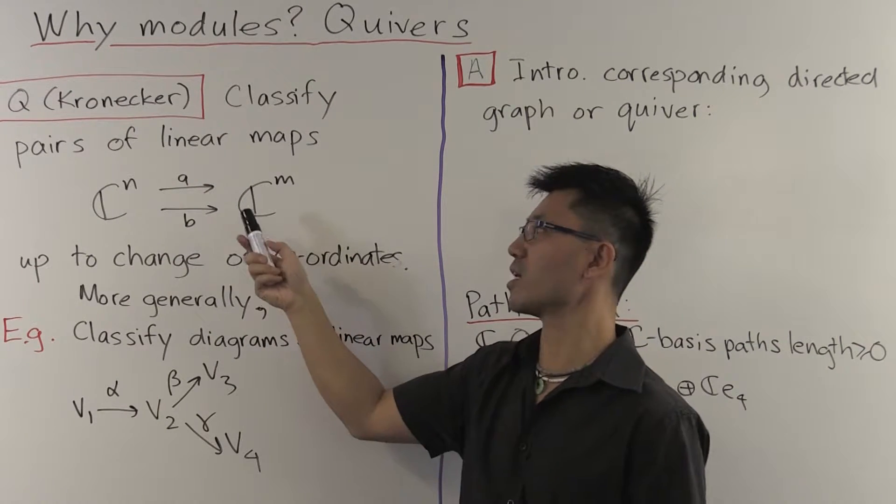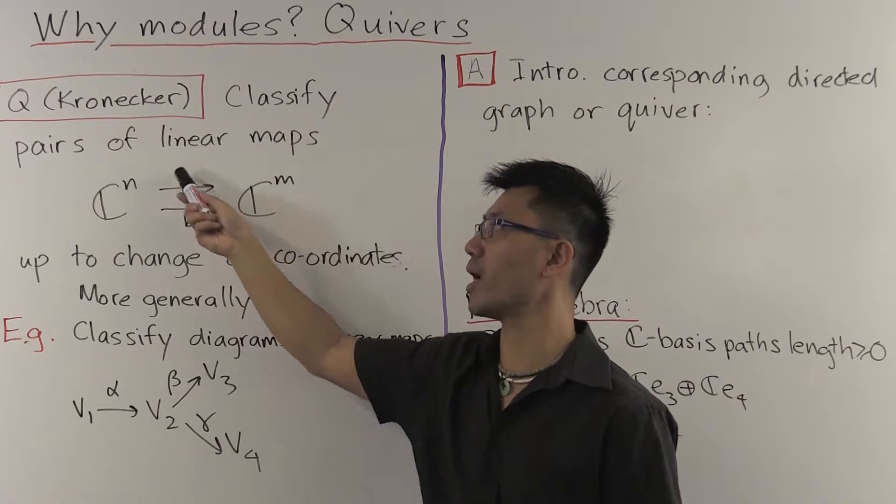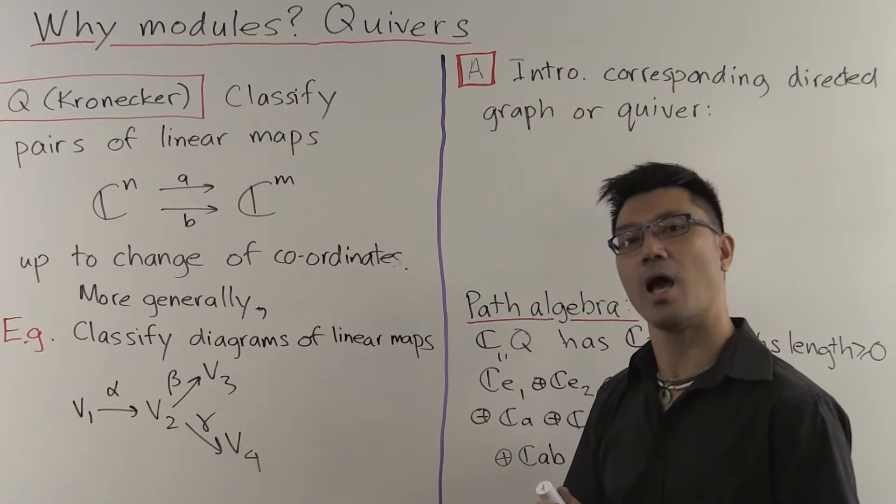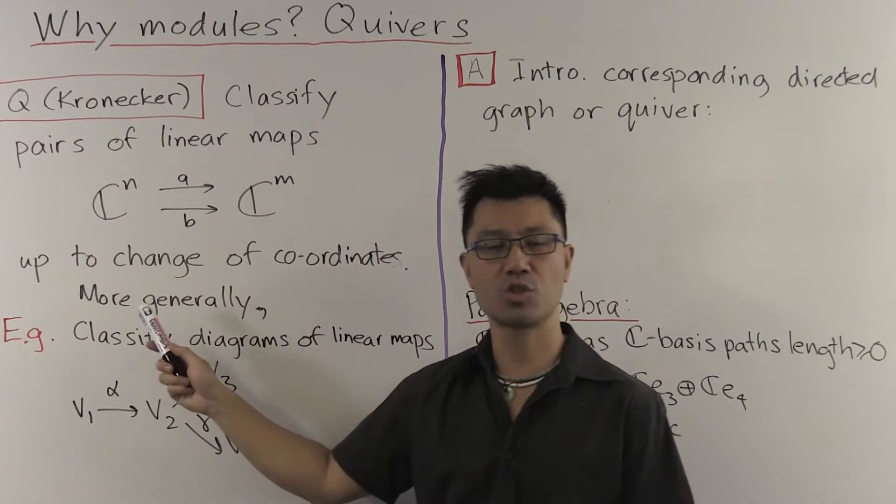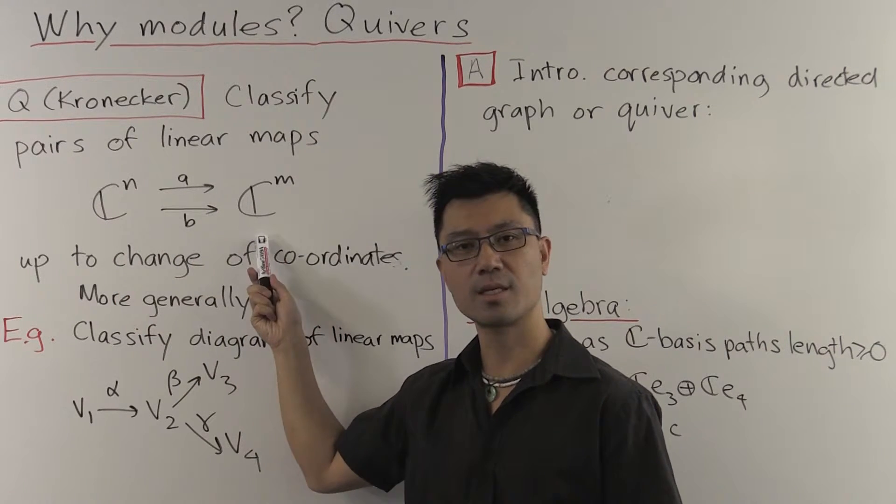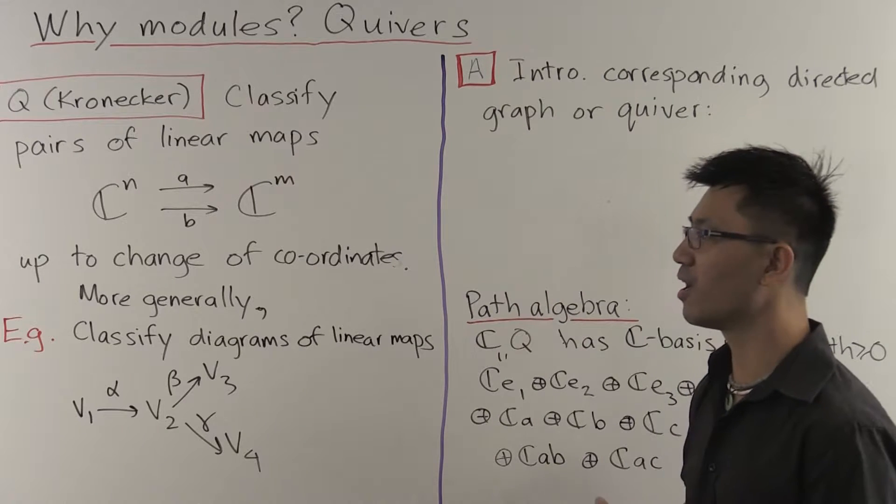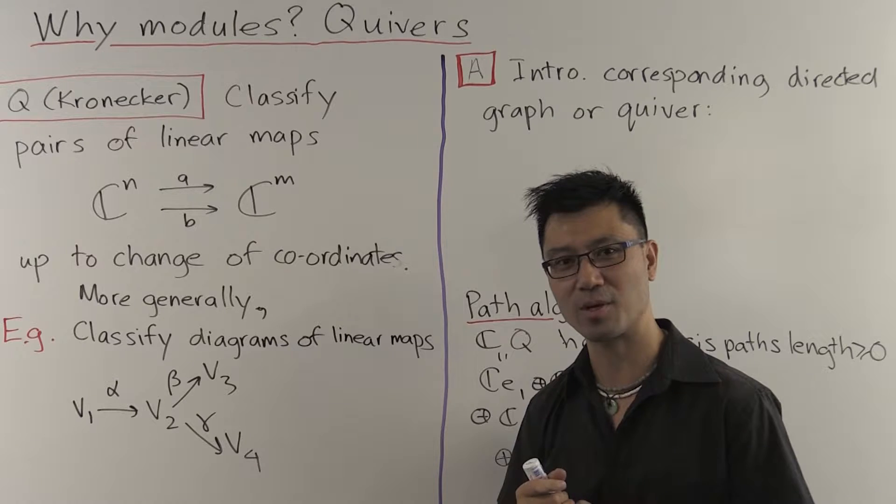So in other words, you can think of this as just two M by N matrices corresponding to A and B. And his question was to classify all such pairs up to change of coordinates in both the CN and the CM. That's a very interesting question. And unfortunately, I won't have time to give you the answer to this rather interesting question.